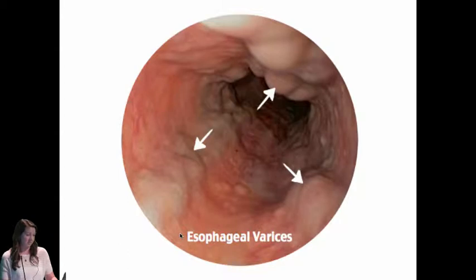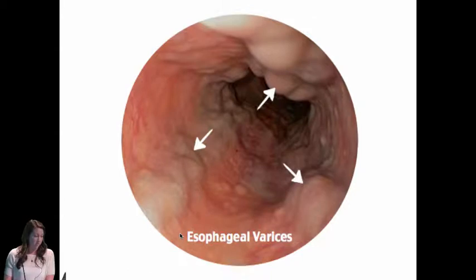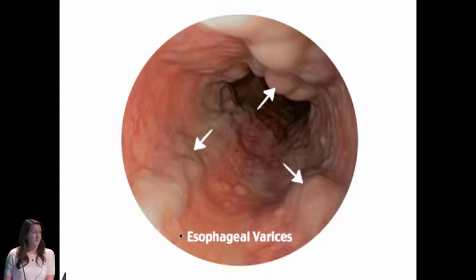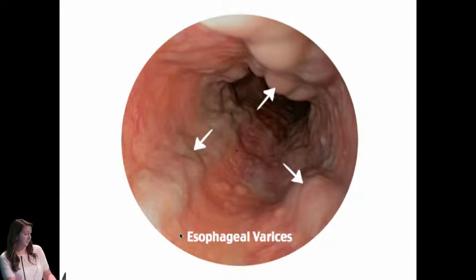Esophageal varices look terrifying — they're from portal hypertension, mostly from alcoholic liver disease in the United States. They account for about 7% of all cases of upper GI bleeding. That doesn't seem like much, but the scary thing is they're very prone to re-bleeding and carry a 16% mortality rate.